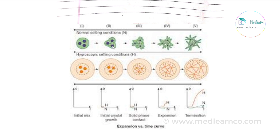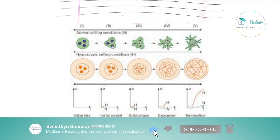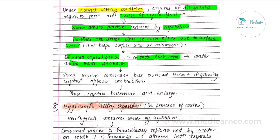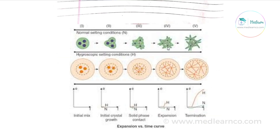The same process continues, and there will be an outward thrust of the growing crystals. The growth of the crystals creates an outward thrust, and then there is a contraction — this results in setting expansion under normal conditions.